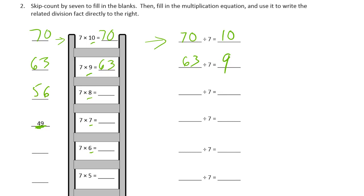56, 8. 49, 7. 42, 7 times 6, 42. 42 divided by 7 is 6.